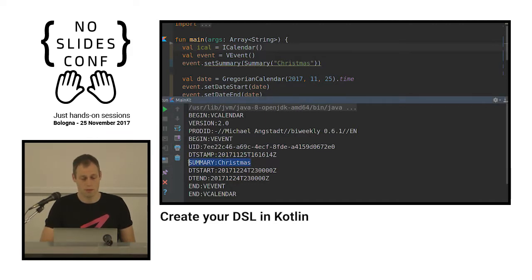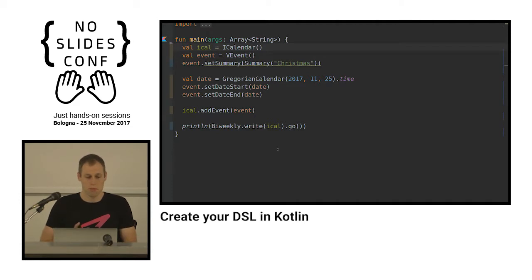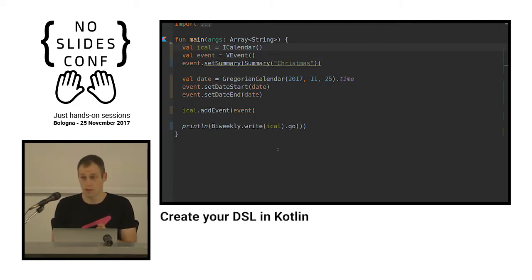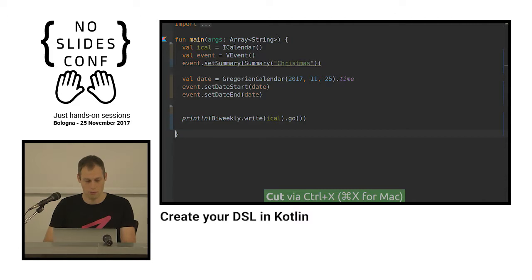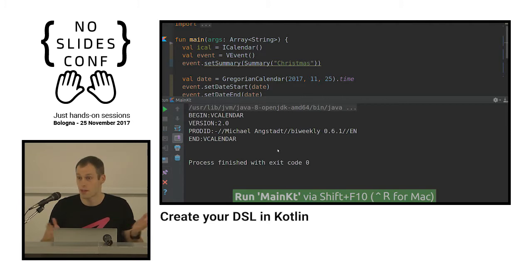So it runs — here is an event: Christmas. This code — there is nothing special in it. You've seen similar code thousands of times before, and there is nothing bad in this code, but actually there are a lot of problems with it. For example, when I take the 'add event' line and move it to the end, it will compile and run, but the result will probably not be what we expect — an empty calendar.